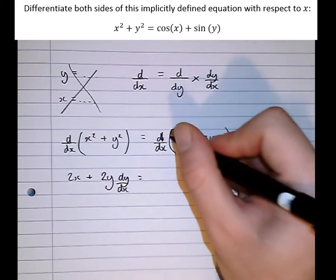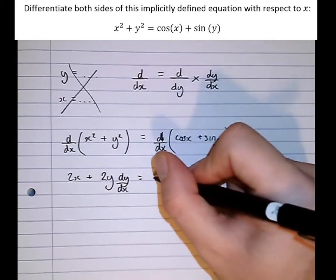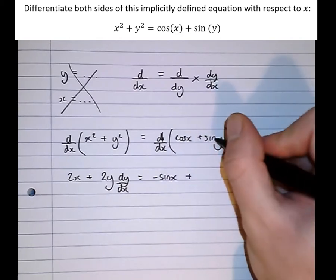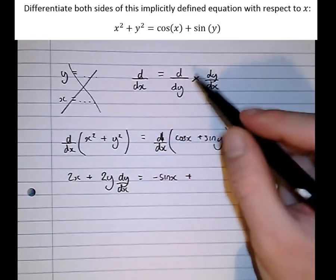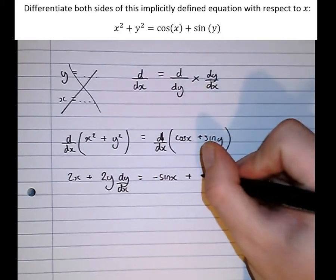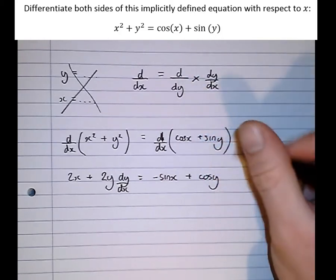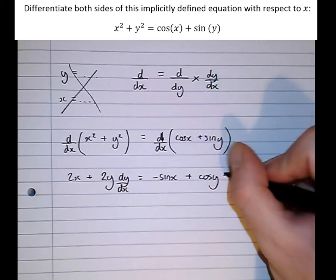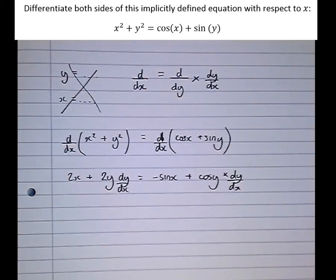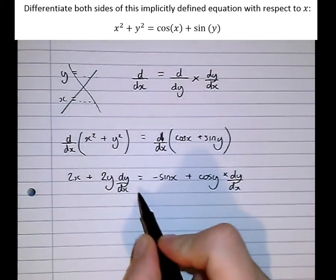On the right side, the differential of cos(x) is minus sin(x) plus, and the differential of sin(y) with respect to x, well we can't do it. So if we use this alternative method of differentiating with respect to y, to get cos(y), then multiplying by dy/dx, that's the equivalent of having differentiated with respect to x.